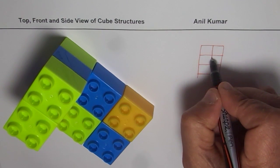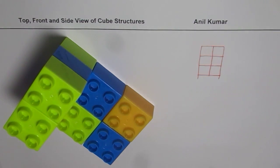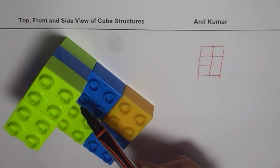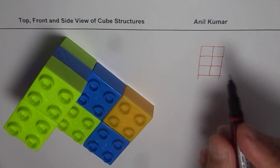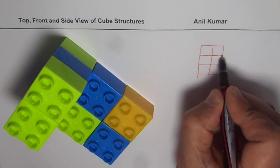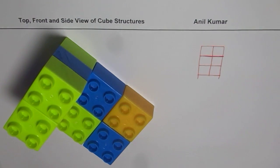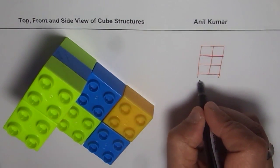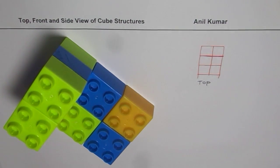That is my top view — I see six blocks from the top. I also notice that at this stage there is a change in depth, and this change in depth should be shown by a bold line. That bold line indicates the change in depth, and that is how we draw the top view.